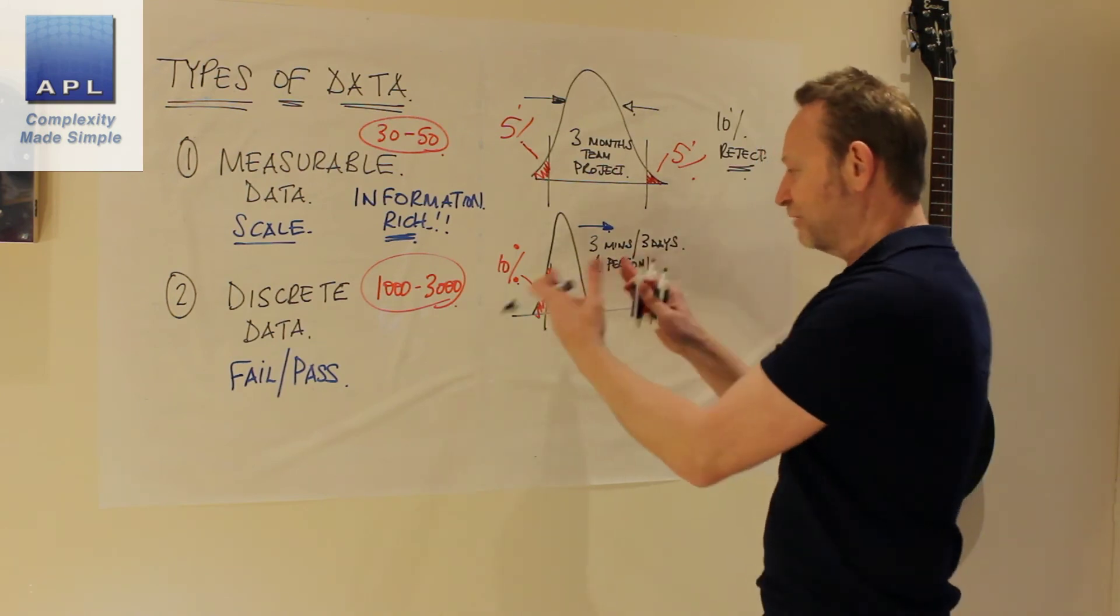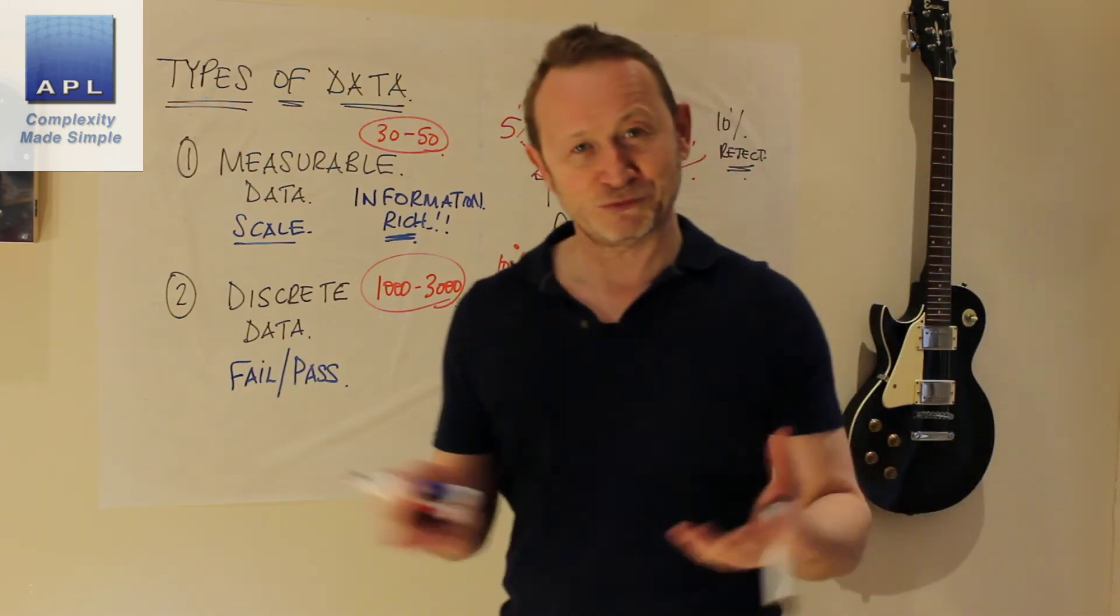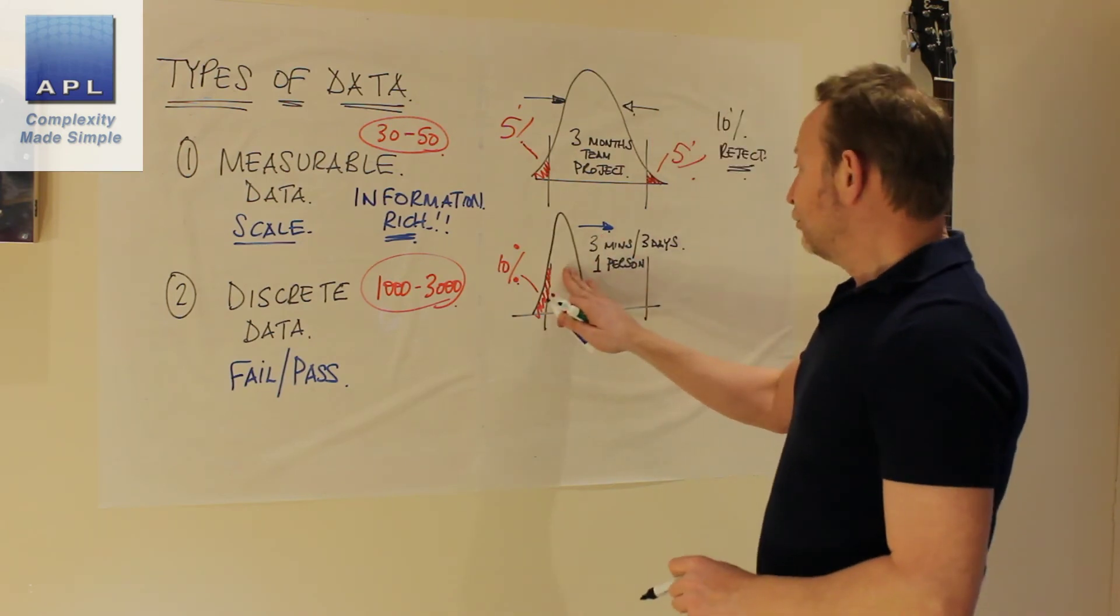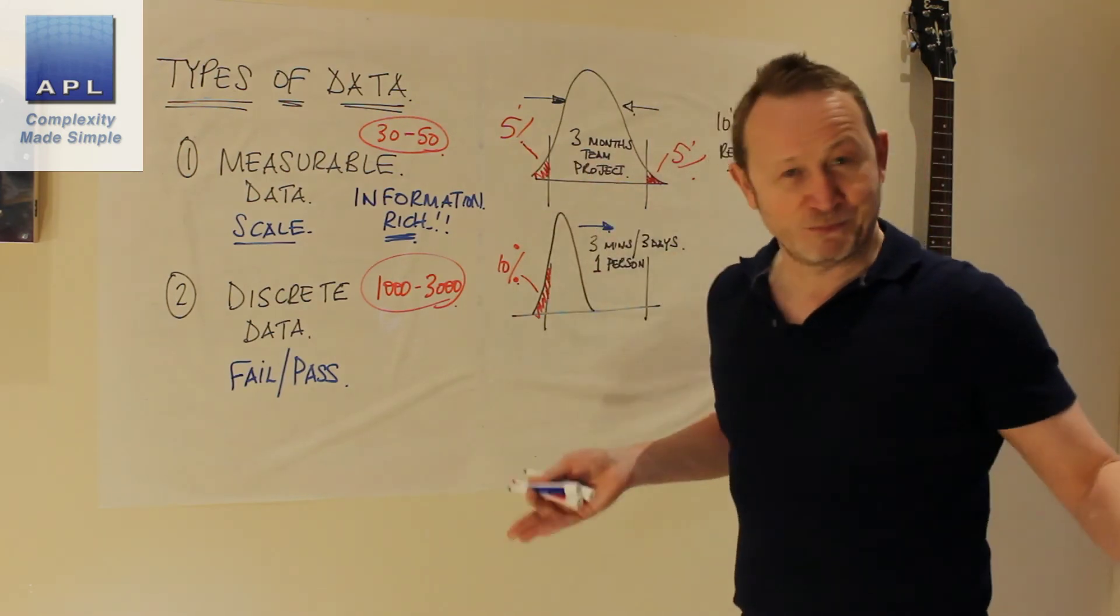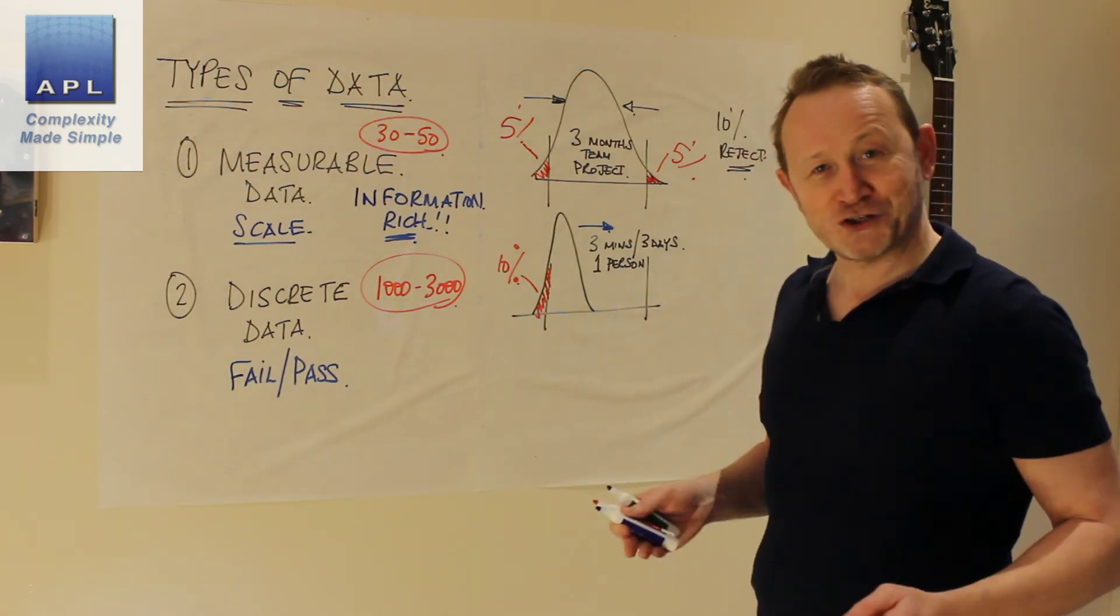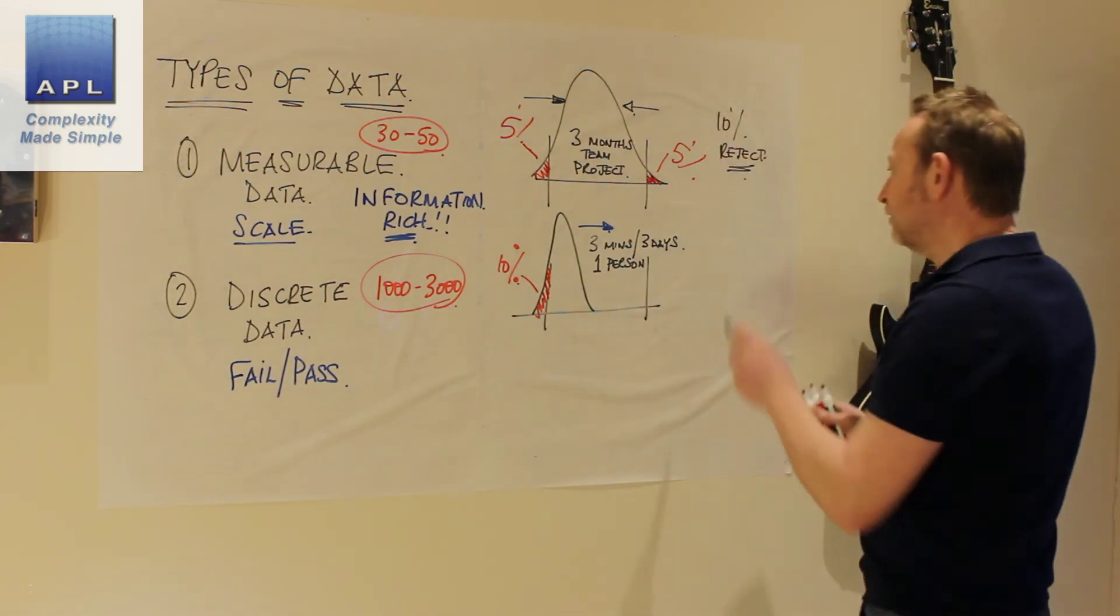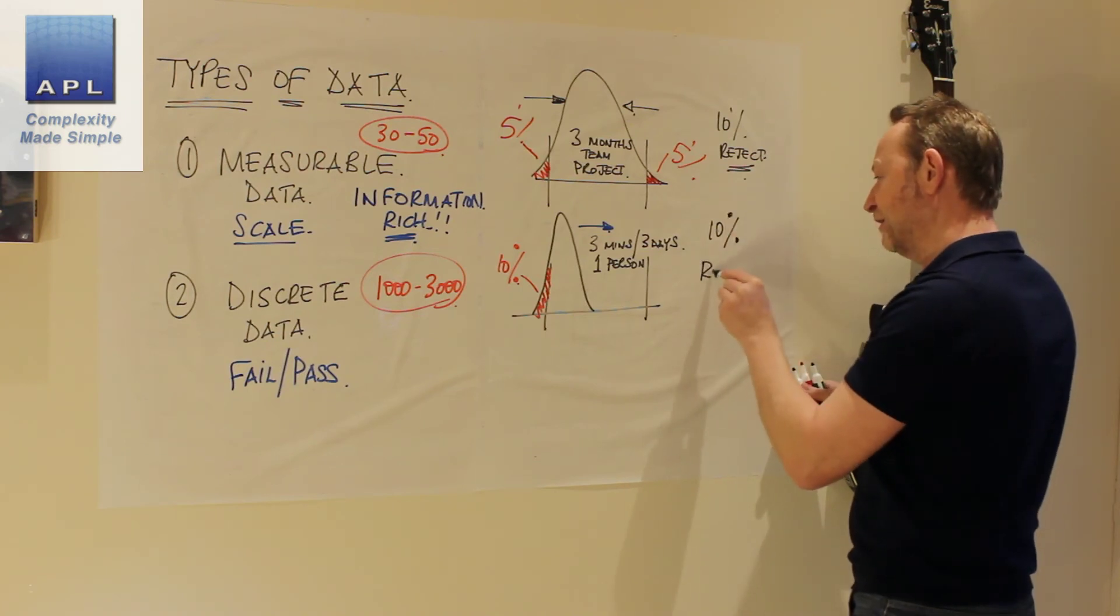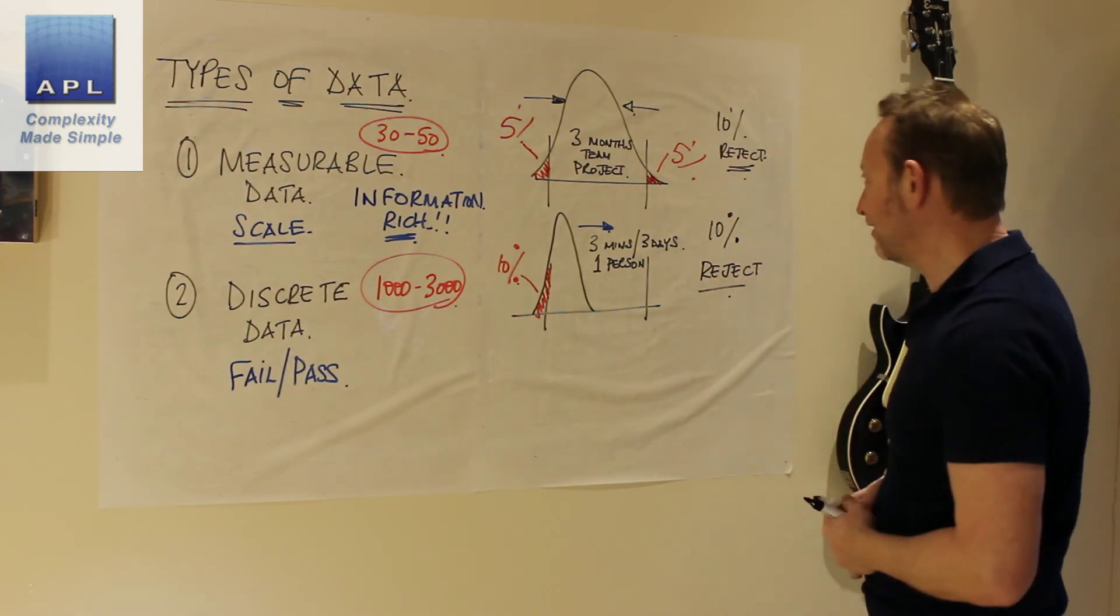So this is going to take three minutes, this is going to take three months. This is important knowledge to know by the way. What will pass-fail data tell you? You have a 10% reject rate. And that's it.